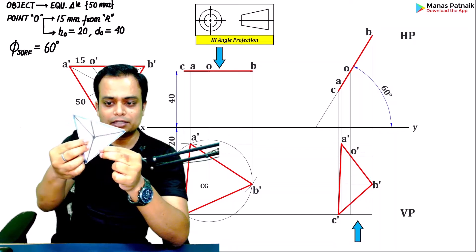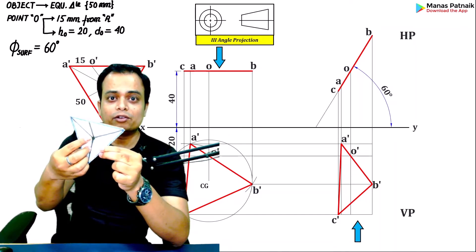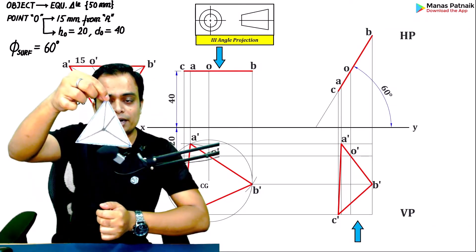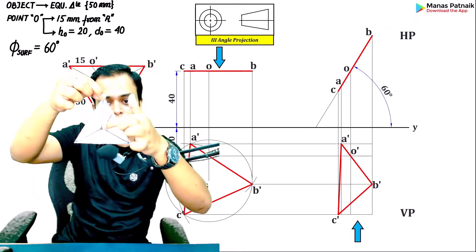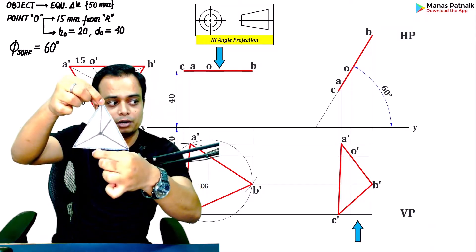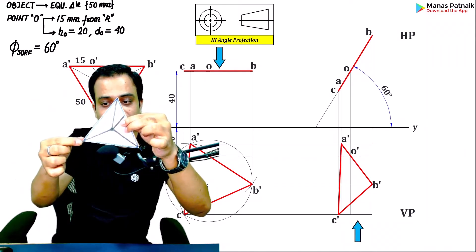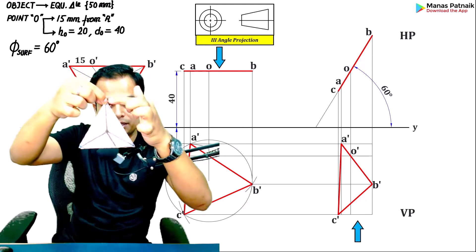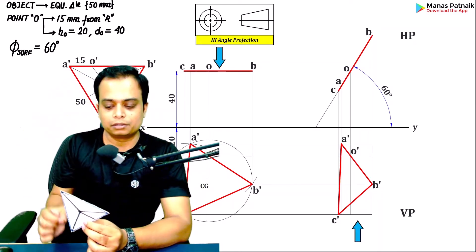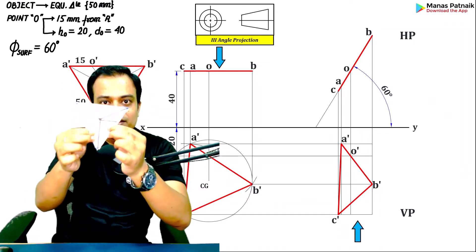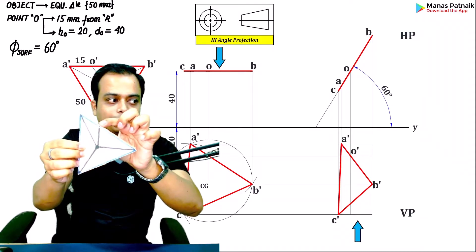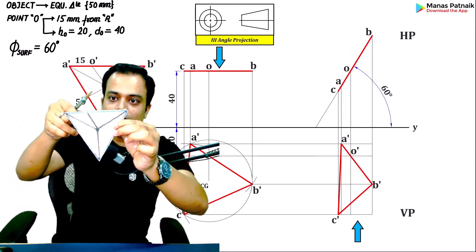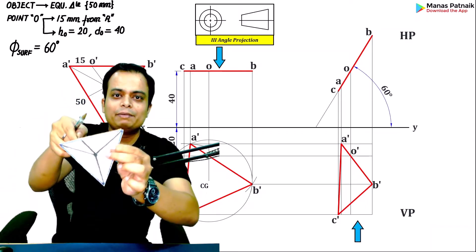Before doing that, let me explain the center of gravity. If you suspend the surface from a corner, the line joining that corner and the center of gravity becomes absolutely vertical. Similarly, if you suspend it from point O, the line joining O and the center of gravity also becomes absolutely vertical when equilibrium is reached.